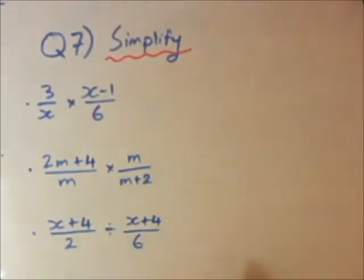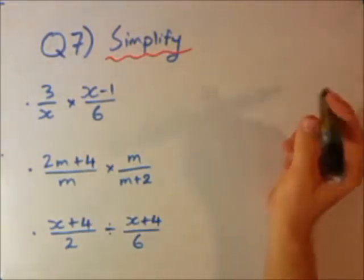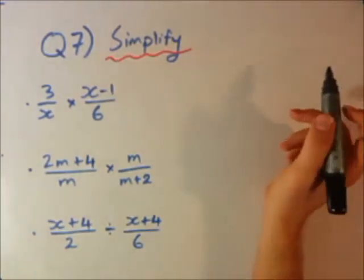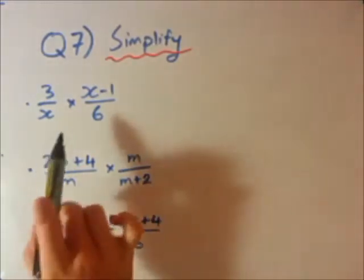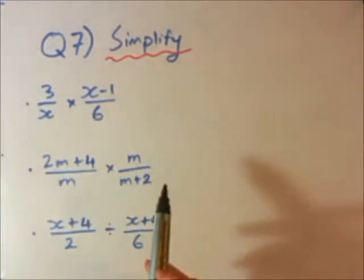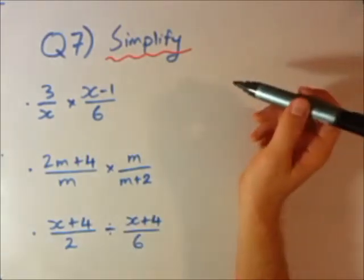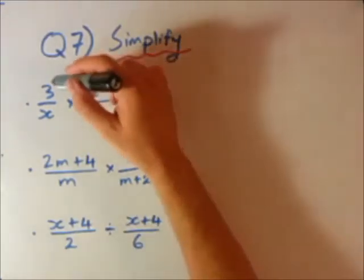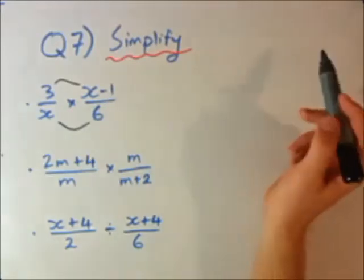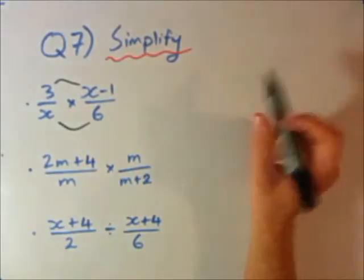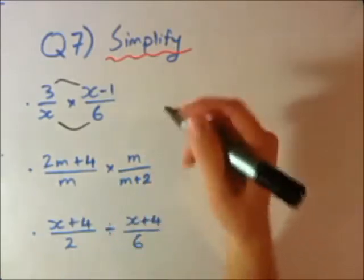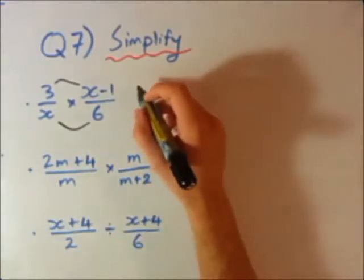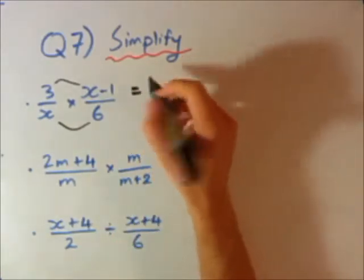Question 7. Simplifying again. These questions are getting a little bit harder now, but nothing we can't do. We're going to be multiplying fractions. The key for multiplying fractions is you just times the top and times the bottom. You probably already know that, so let's go ahead — and we're going to have to simplify afterwards, like we've done in the last few questions.